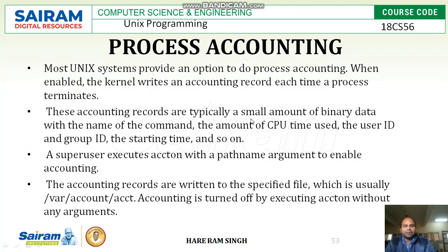These accounting records are typically a small amount of binary data with the name of the command, the amount of CPU time used, the user ID and group ID, the starting time, and so on. In process accounting, we maintain CPU time, user ID, group ID of the process, and starting and ending time of the process. These are the things we record in process accounting.